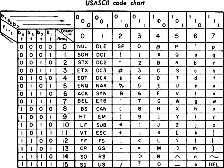The code itself was patterned so that most control codes were together and all graphic codes were together, for ease of identification. The first two so-called ASCII sticks were reserved for control characters. The space character had to come before graphics to make sorting easier, so it became position 20 hex. Many special signs commonly used as separators were placed before digits. The committee decided it was important to support uppercase 64-character alphabets, and chose to pattern ASCII so it could be reduced easily to a usable 64-character set of graphic codes, as was done in the DEC SIXBIT code.